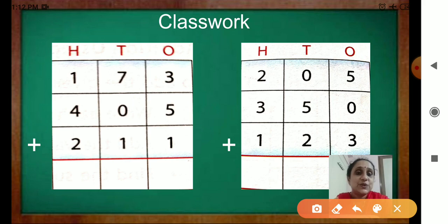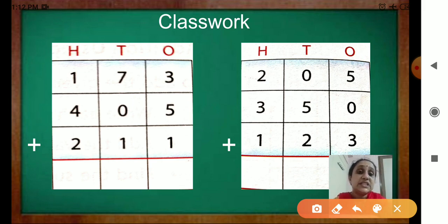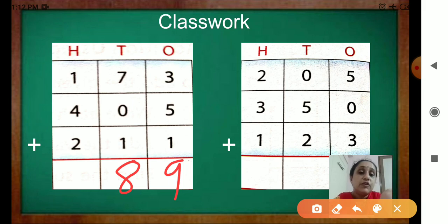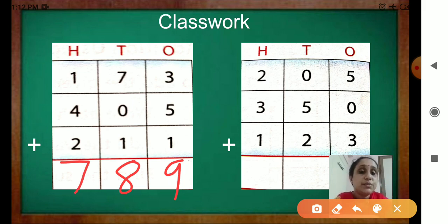Have you started? Okay. Now I am solving the sums. 173 plus 405 plus 211. So from the 1s place we will start: 3 plus 5 is 8, and 8 plus 1 is 9. Then 7 plus 0, you will get 7, and 7 plus 1 is 8. Then come to the 100s place: 1 plus 4 is 5, and 5 plus 2 is 7. The answer is 789.